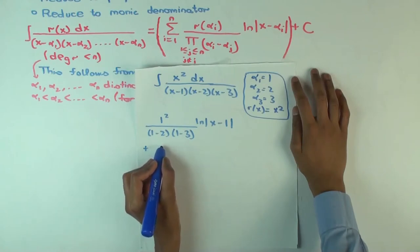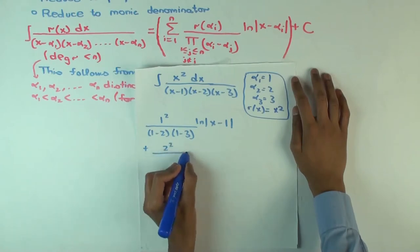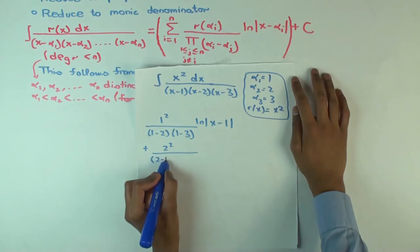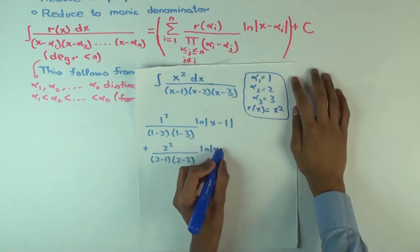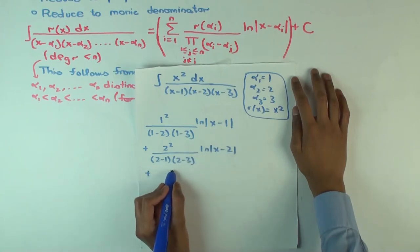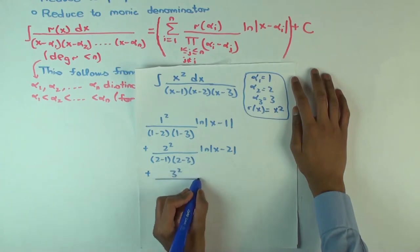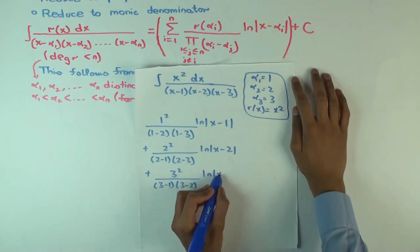plus 2 squared over (2 minus 1) times (2 minus 3) times ln of x minus 2, plus 3 squared over (3 minus 1) times (3 minus 2) times ln of x minus 3.